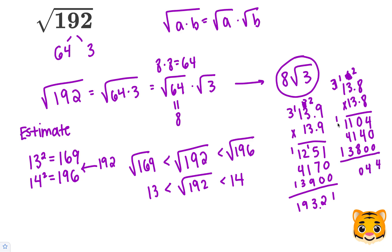Now let's add these together. When we add these together, we end up getting 190.44, which is a little bit further than 193.21 from our 192. So our 13.9 ends up winning out. We can see that the square root of 192 is approximately 13.9.